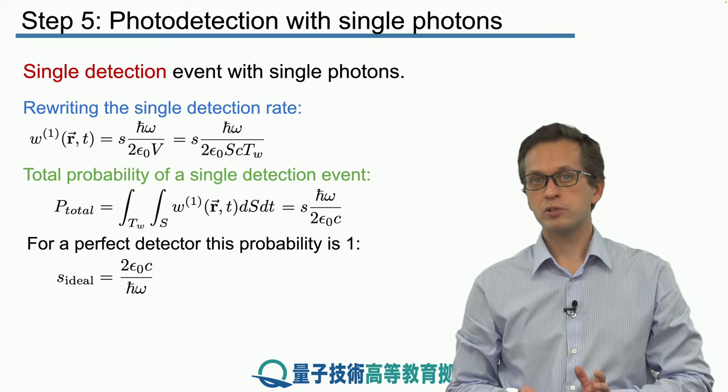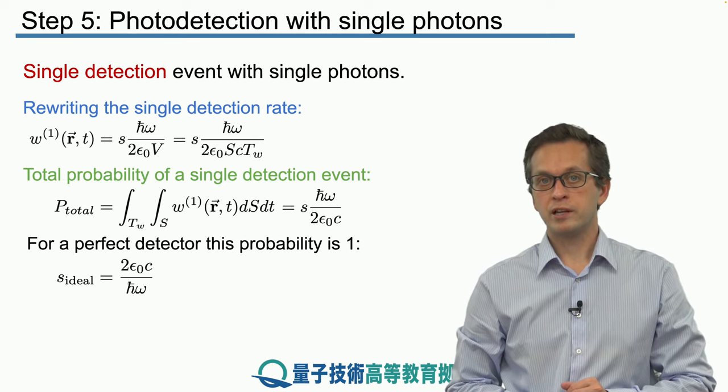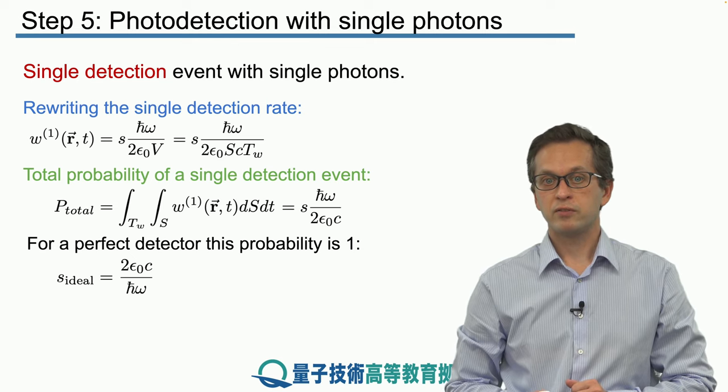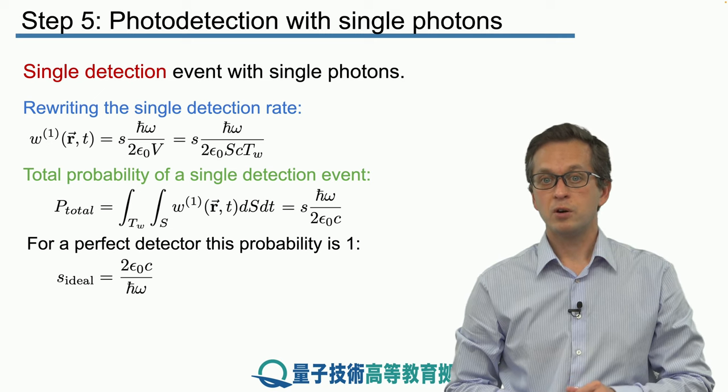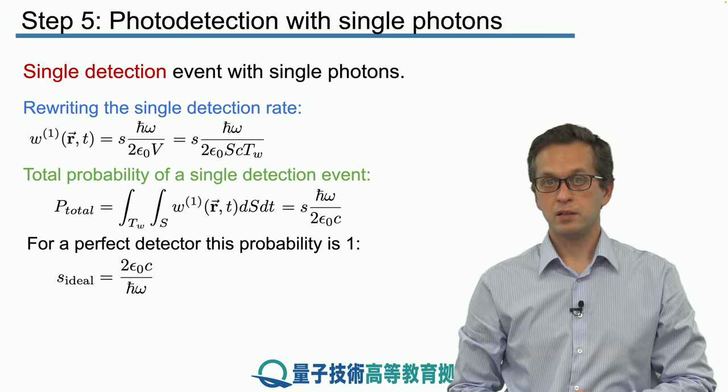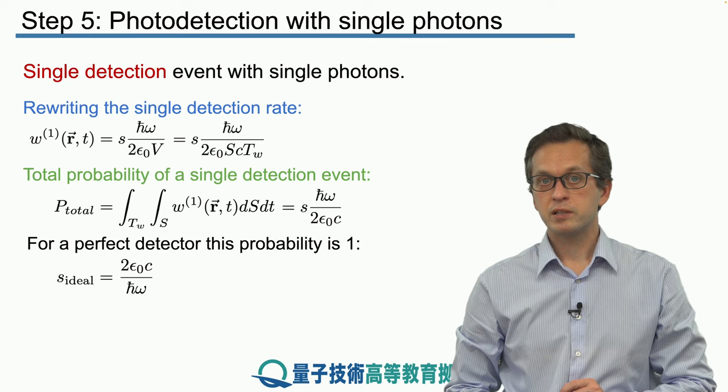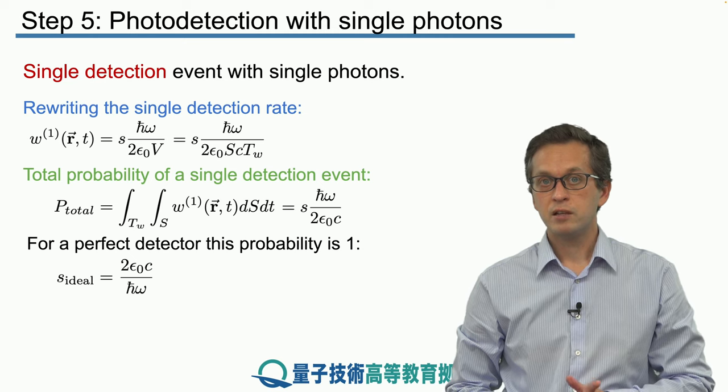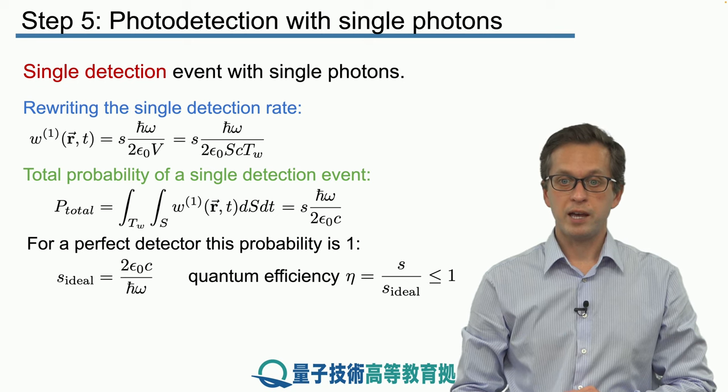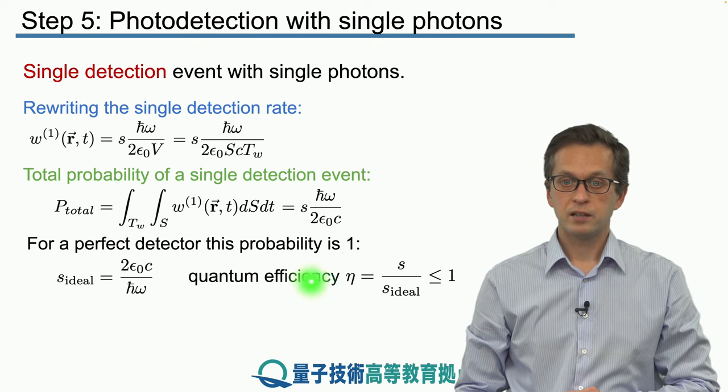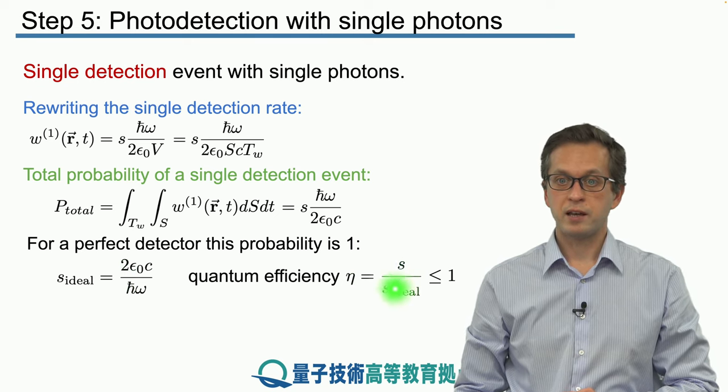But of course, real detectors are not ideal. And in fact, they will have a weaker sensitivity given by the ratio of s over s ideal. And if you remember our discussion of the photoelectric effect, this quantity is known as the quantum efficiency denoted by η. So η is equal to s divided by s ideal. And this is less than or equal to 1.